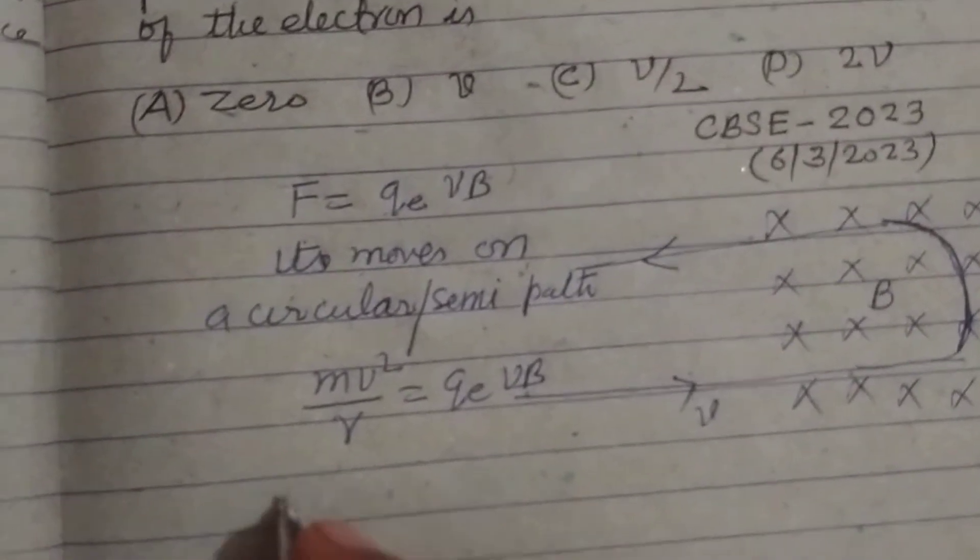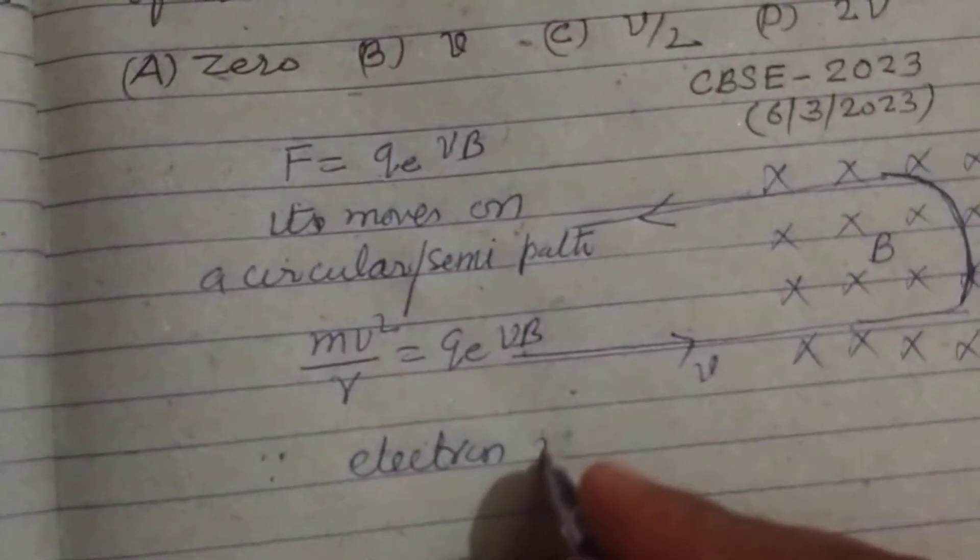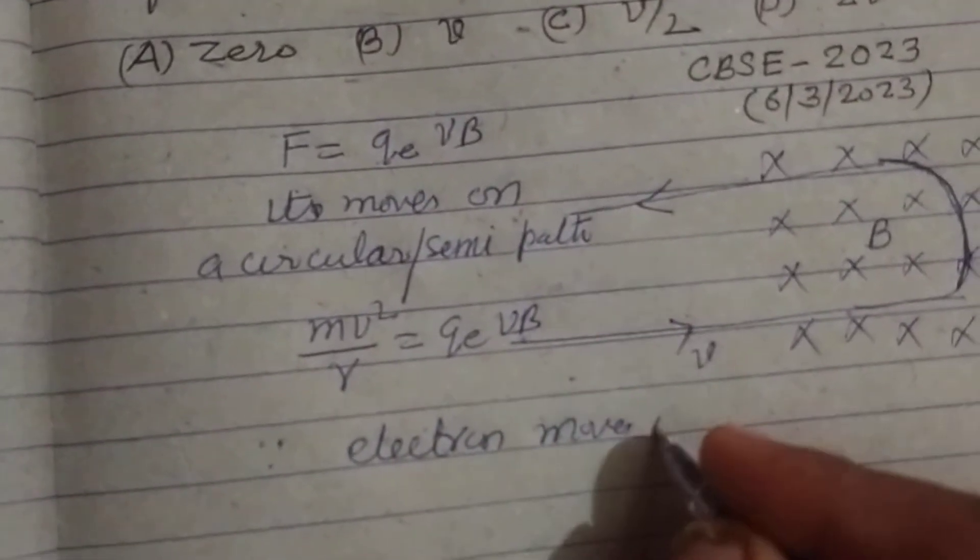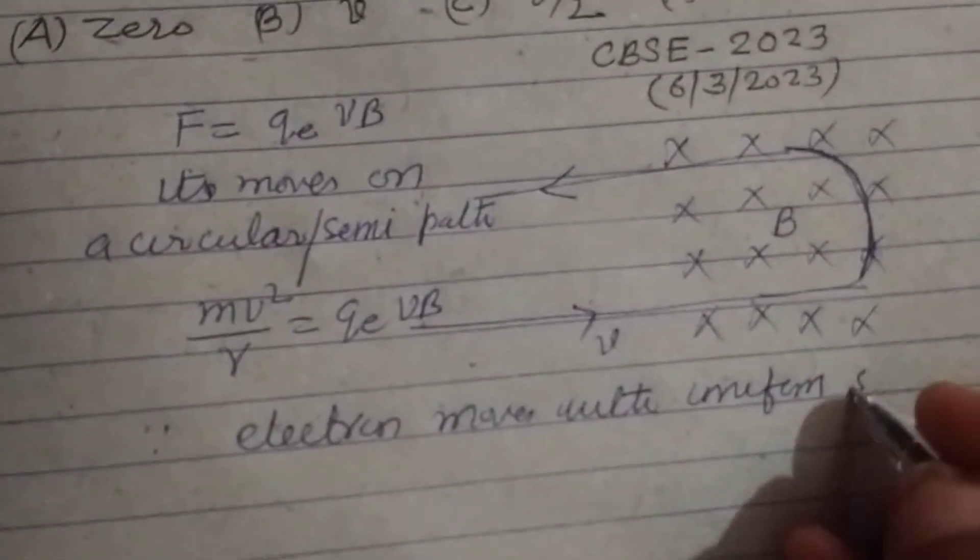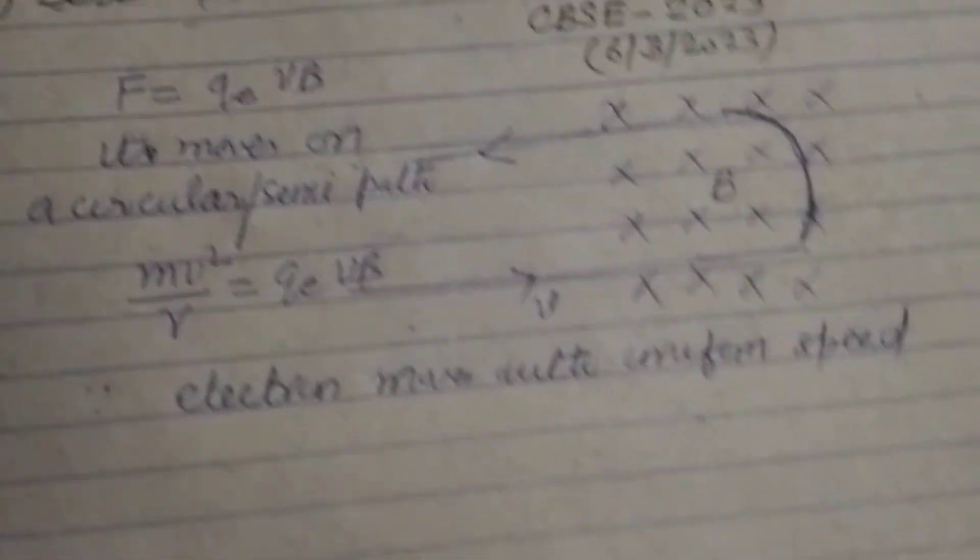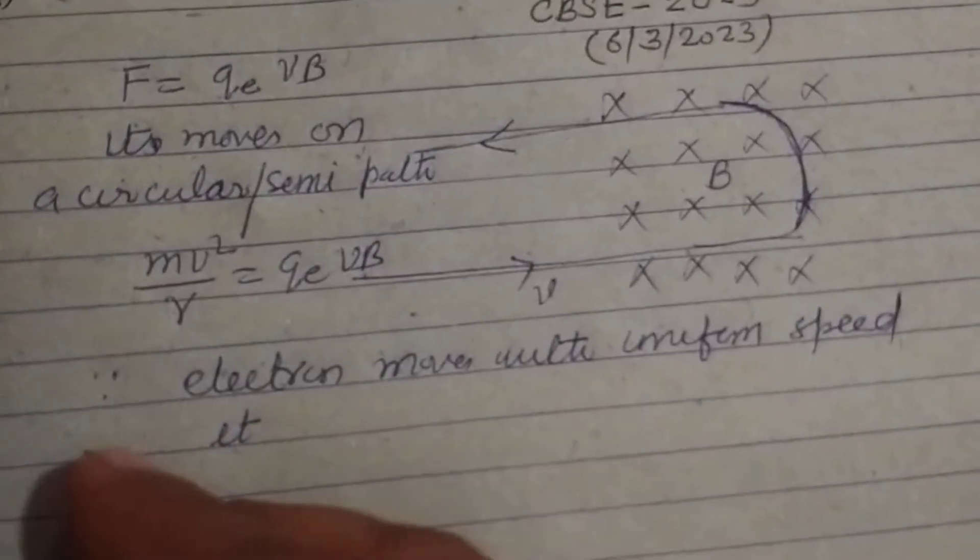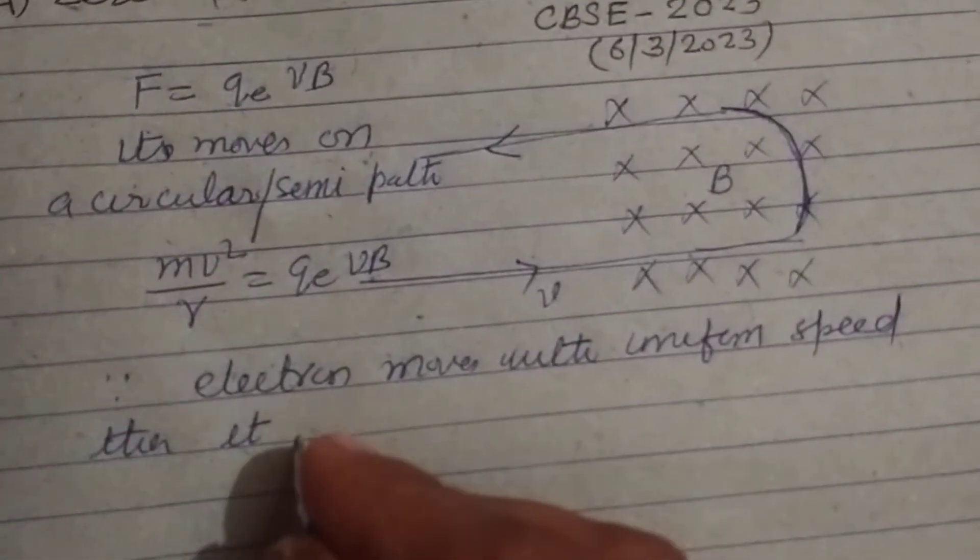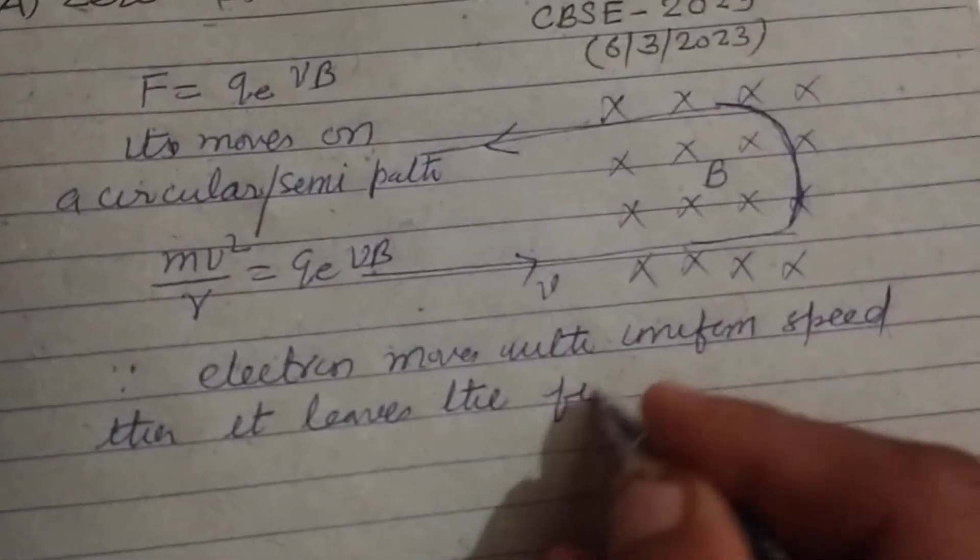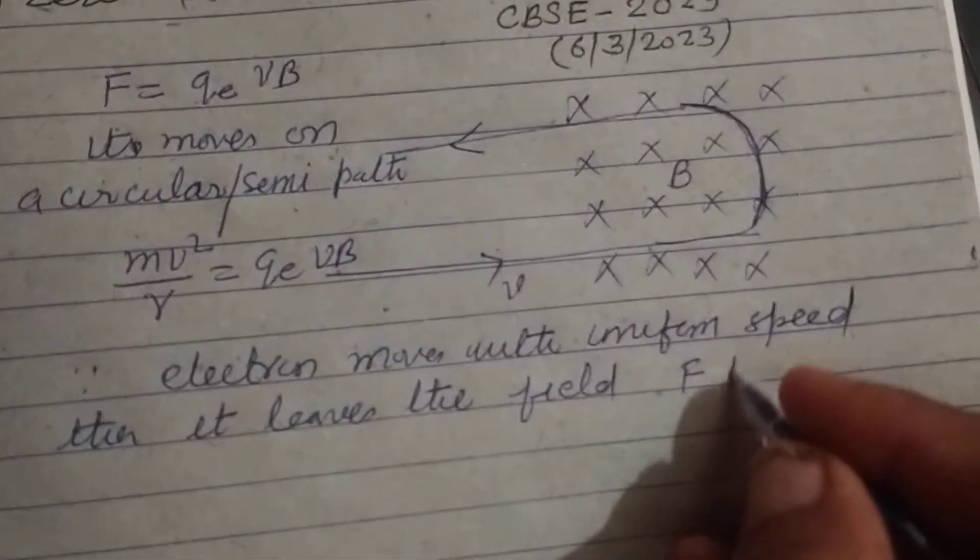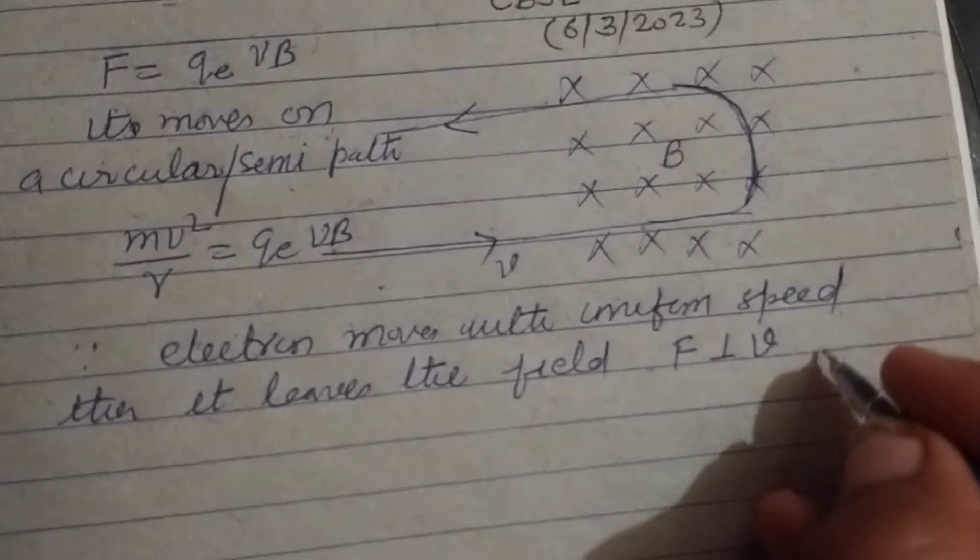Since the electron moves with uniform speed, then when it leaves the field, the force is always perpendicular to the velocity. When it leaves the field...